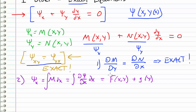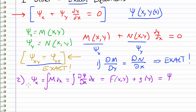Instead of a constant of integration, since we are dealing with partial derivatives, we get a function of integration g(y). If I differentiate this expression with respect to x to undo the integration, the g(y) term vanishes — just like a constant would — because it is purely a function of y, and we treat y as a constant when differentiating with respect to x. That's why integrating with respect to x yields an entire function of y. This result equals our function psi.